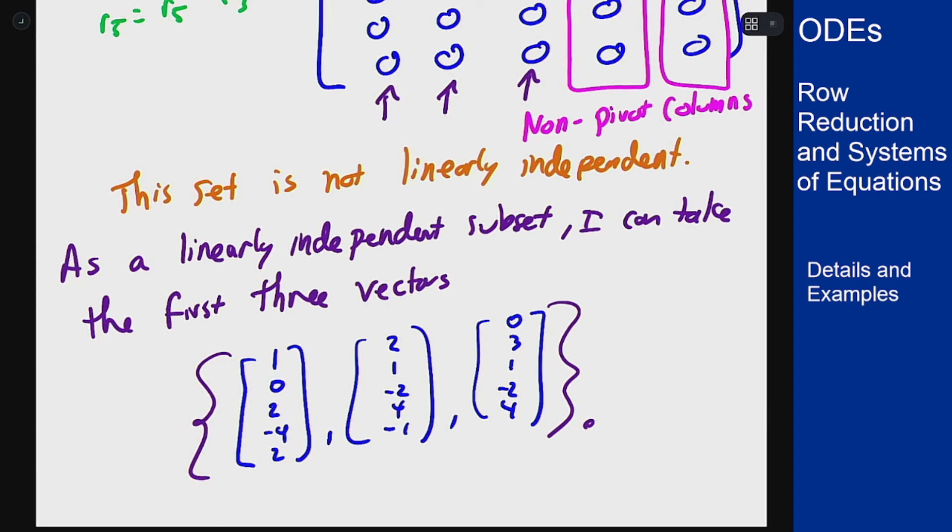Now, this answer is not unique. If I had started by rearranging my columns at the beginning and put the vectors in the matrix in a different order, I would have gotten a different set for this independent subset. However, I still would have gotten three vectors.